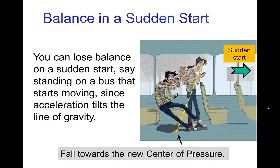So the character, in order to stay in balance with this tilted line of gravity, needs to lean forward. Another example: let's say you're standing on a bus that's not moving and suddenly the bus starts moving forward, accelerating towards screen right. The character was originally in a pose that was in balance when the bus was not moving, but now loses balance because the line of gravity has tilted and the center of pressure is back behind the character — no longer under the base of support, which is the area around the feet. For that reason, the character falls towards the center of pressure.